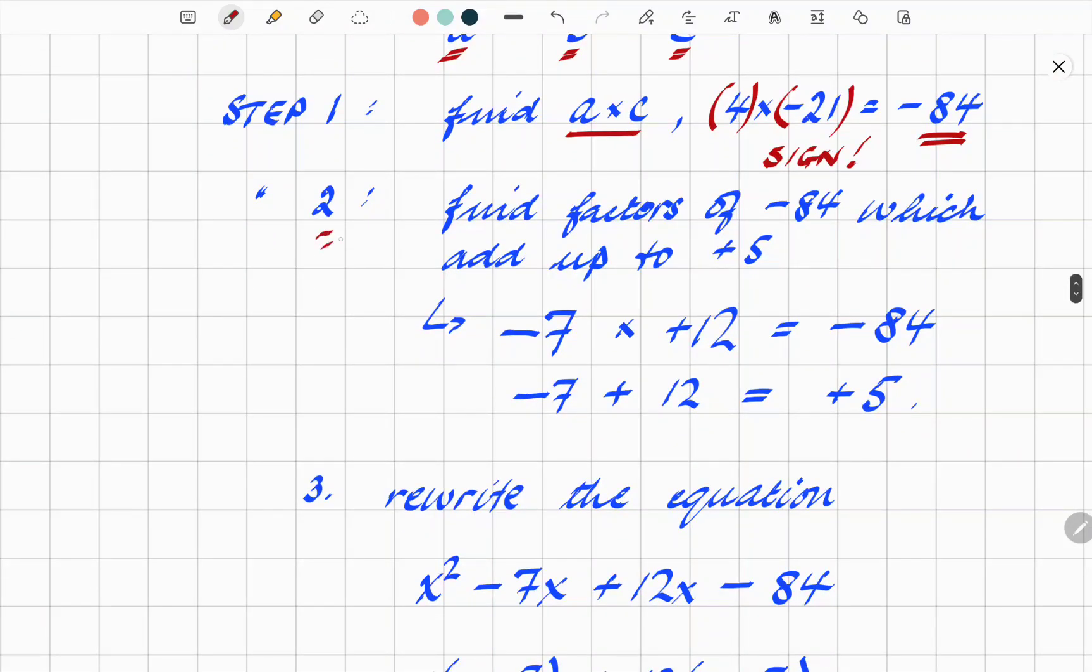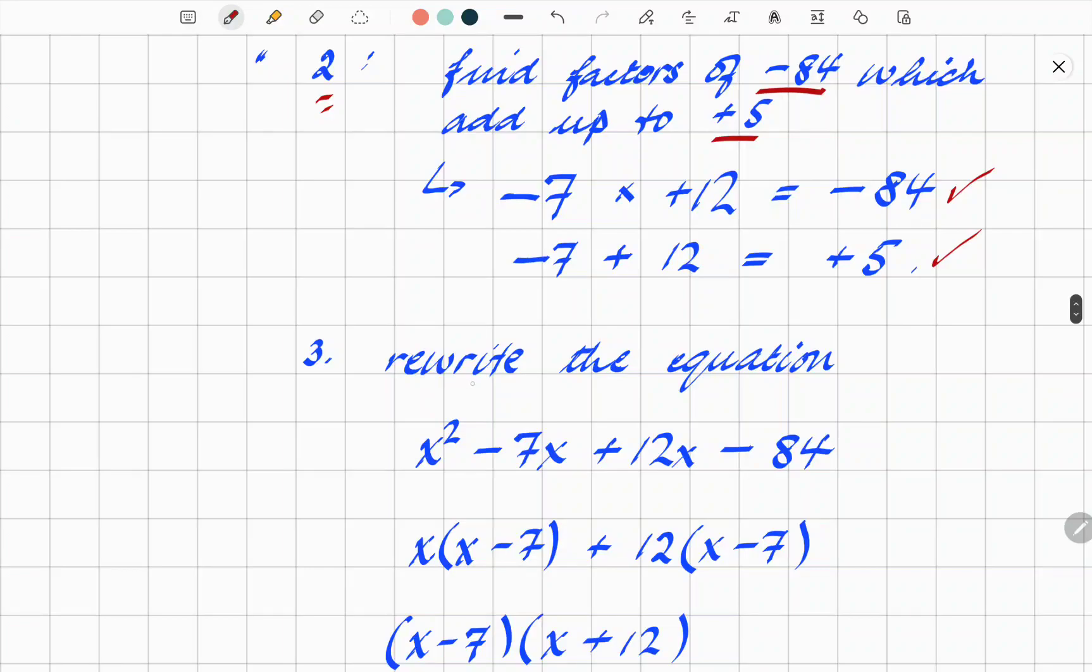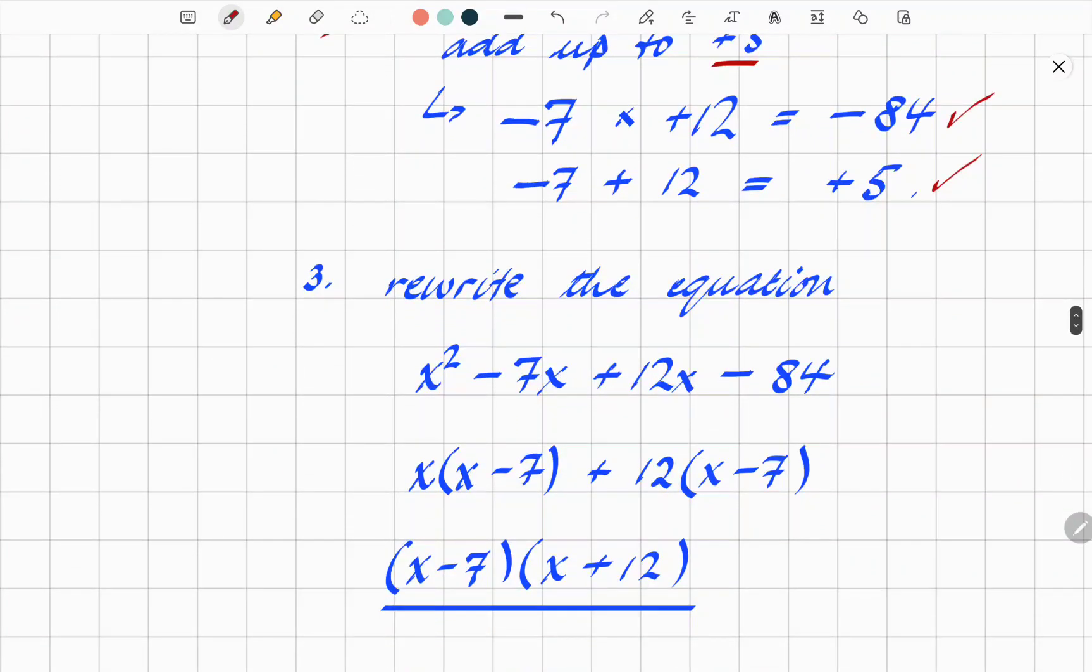The next step, step 2. We want factors of -84, which then also add up to +5. And again, going through your times tables in your head, straight away you should be able to pull out -7 times +12 gives you -84. So that's fine. And -7 + 12 is +5. So that also satisfies it. So what we then do is rewrite the equation where we break out the +5x into those two components, these two numbers here that we had. So we're splitting the 5x up into 4x² - 7x + 12x - 84.